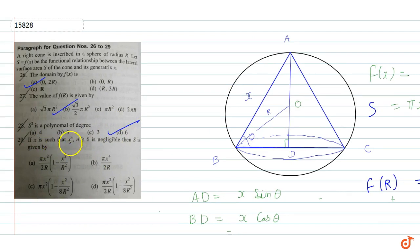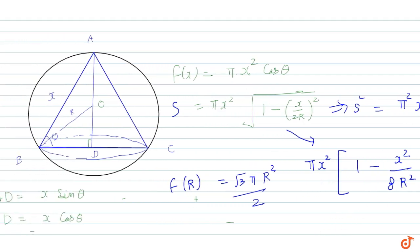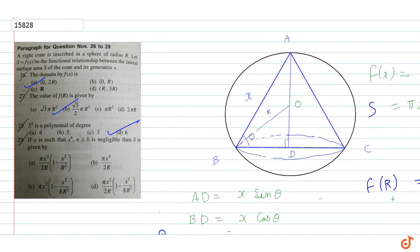If x is such that x raised to power n for n greater than or equal to 6 is negligible, then s is given by: We take the binomial expansion of 1 minus x square by 4r square to the power 1 by 2. This gives us 1 minus x square by 8r square. Higher terms have x to the power 4 or more, which when multiplied by x square gives x to the power 6 and becomes negligible. So our answer is pi x square into 1 minus x square by 8r square. The correct answer is option C.